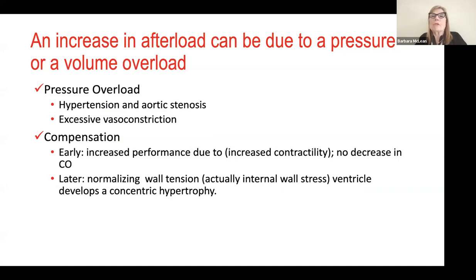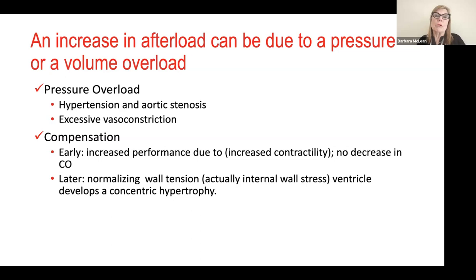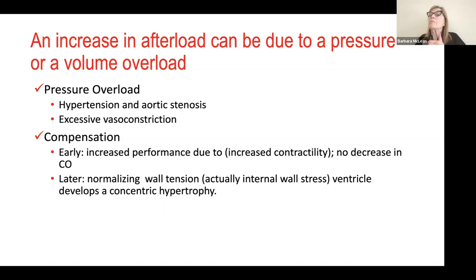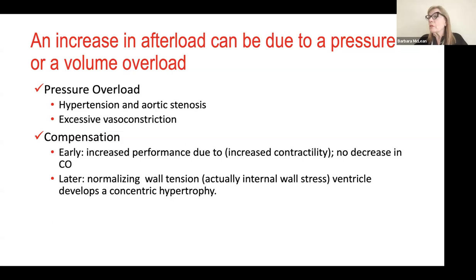Afterload to the left ventricle increases with excessive vasoconstriction, hypertension, aortic stenosis, and excessive venoconstriction — these are all pressure overload states making the aorta narrower so the LV works harder to eject. For the right heart, the most common issue changing afterload is positive pulmonary pressures, particularly PEEP, which forces constriction on the pulmonary vessels. You typically see early enhanced contractility, but ultimately the ventricles will develop concentric hypertrophy when working against a hypertensive state.